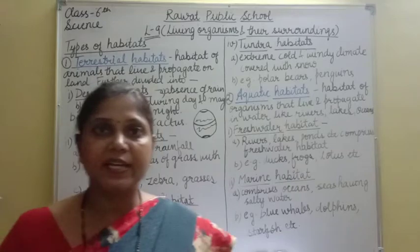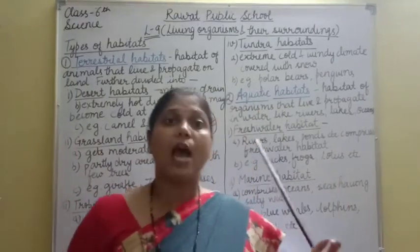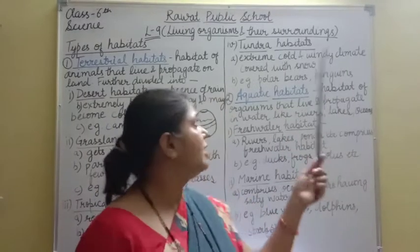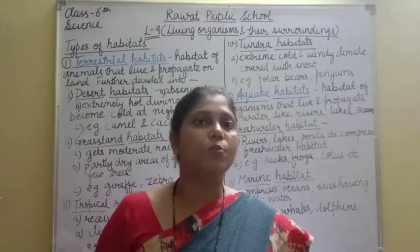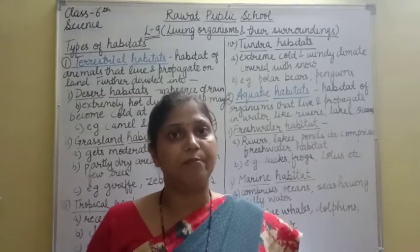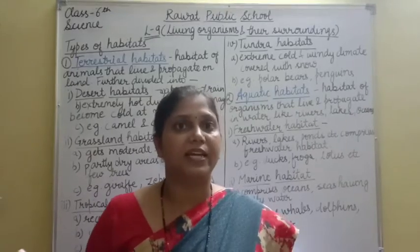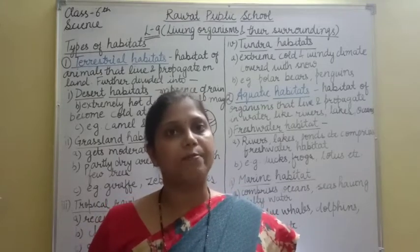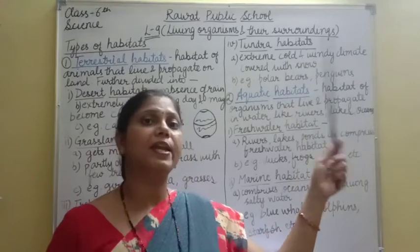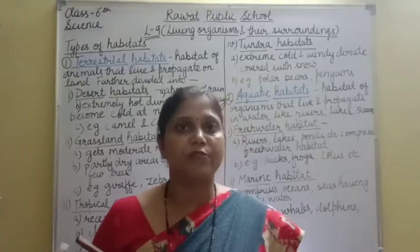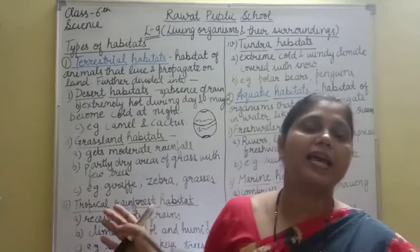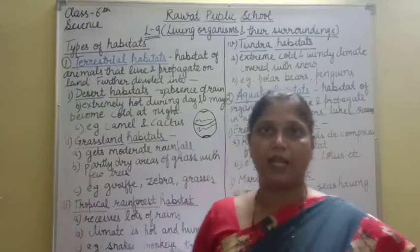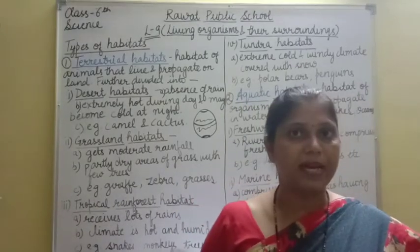Tundra habitat में survive करने वाले organisms: polar bears, penguins, reindeer. अगर camel को tundra habitat में छोड़ दें तो camel survive नहीं कर पाएगा, या polar bear को desert habitat में लें तो वो भी survive नहीं कर पाएगा. इसकी body adapted है cold और snow वाले regions में रहने के लिए. तो यह सारा terrestrial habitats के बारे में पढ़ा।